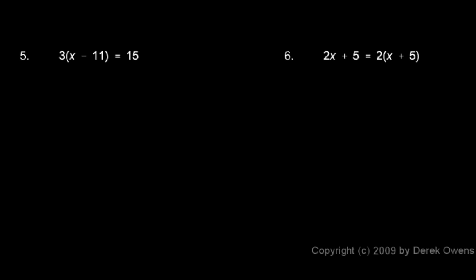We can start by distributing the 3. So we multiply 3 times x and minus 3 times 11. So the left side becomes 3x minus 33 equals 15.